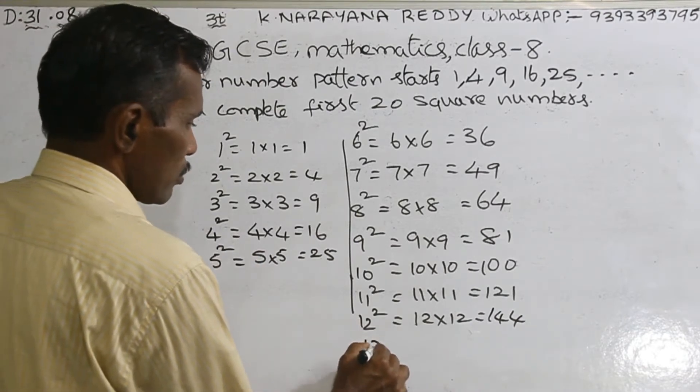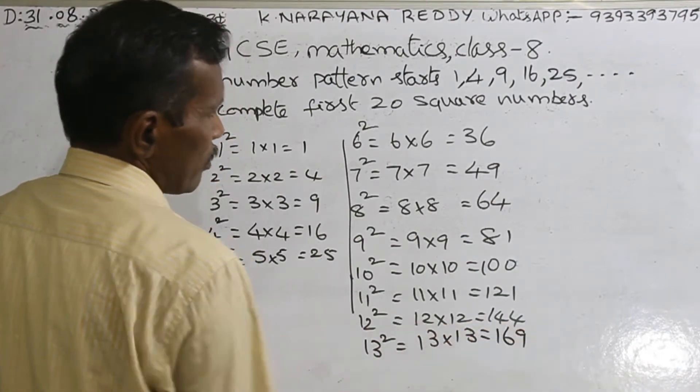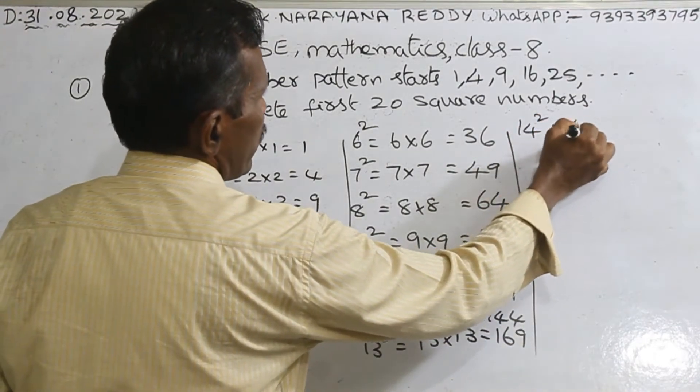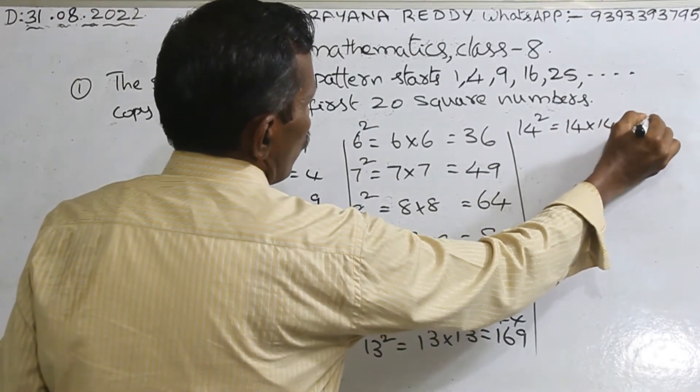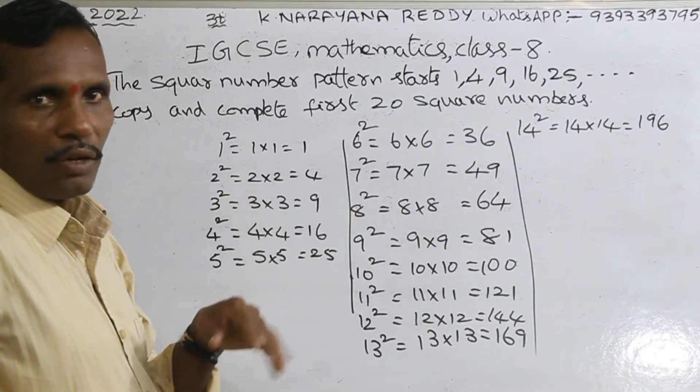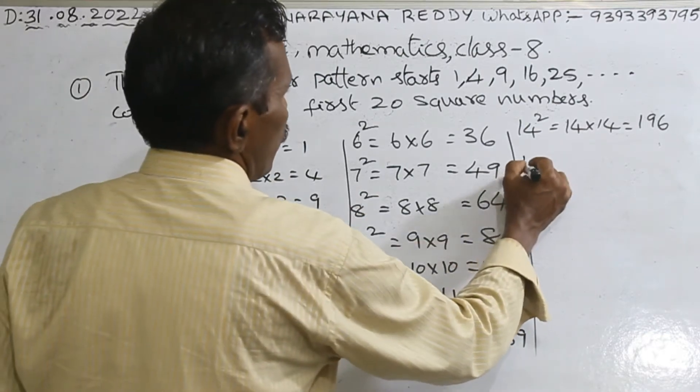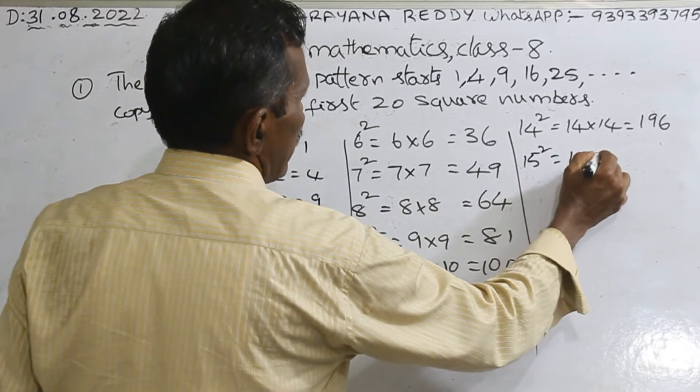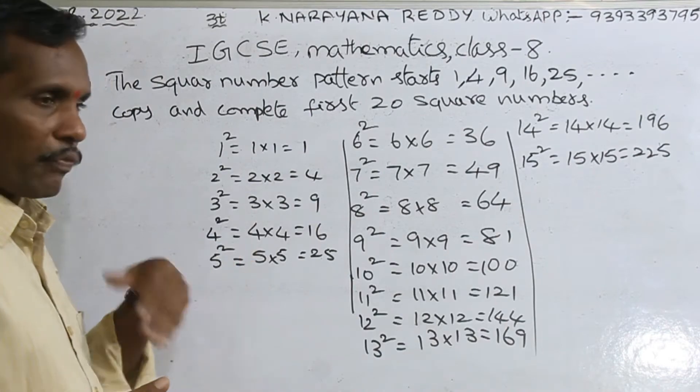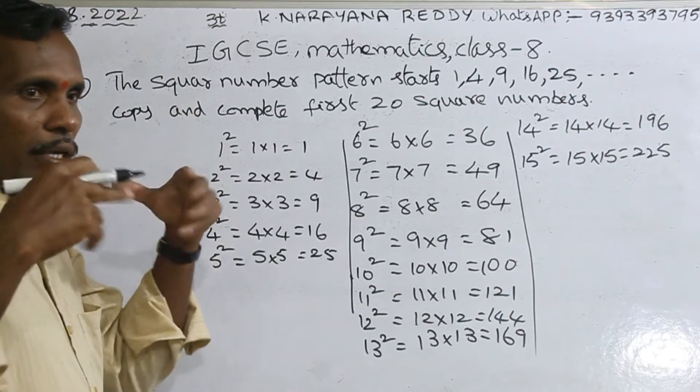13 square: 13 into 13 equals 169. 14 square: 14 into 14. Because 14 threes are 140, 14 fours are 56, so 14 times 56 equals 196. Simple logic. 15 square: 15 into 15 equals 225. Means 15 threes are 150, 15 fives are 75, so 150 plus 75 equals 225. Like that, you have to assume in your mind.